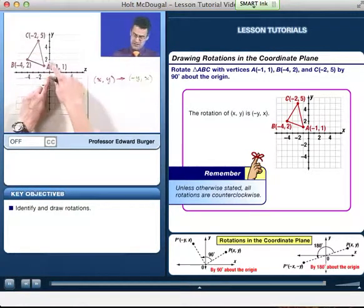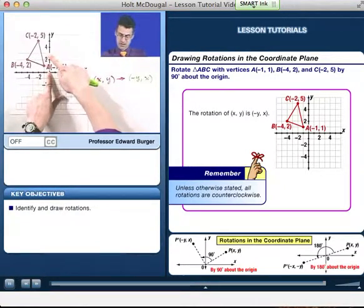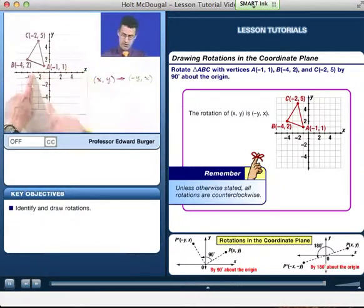But what if I took the point, let's say, 0, 3 and rotate it 90 degrees counterclockwise? Then it goes all the way to negative 3, 0. So 0, 3 goes to negative 3, 0. You can see this transformation actually works. So let's see where everyone goes.